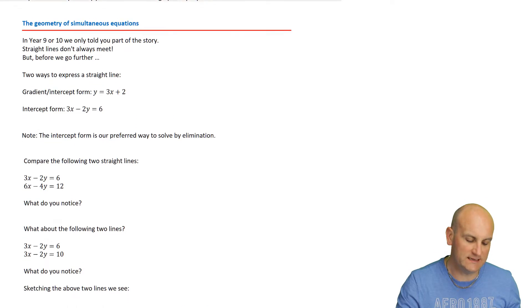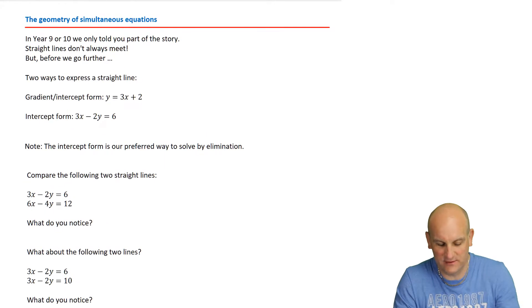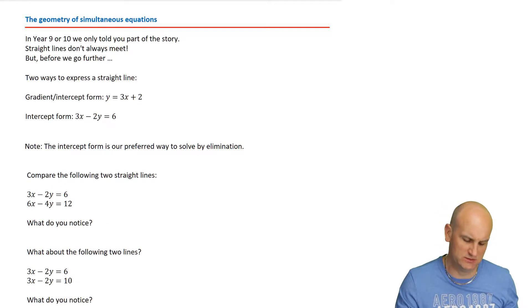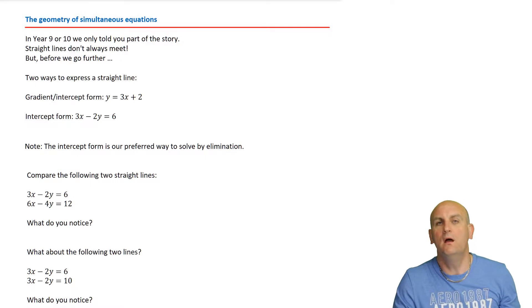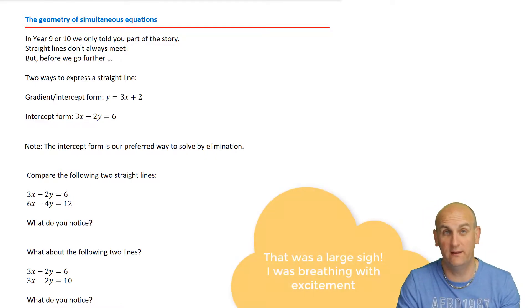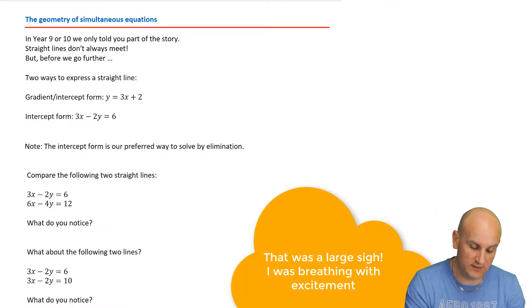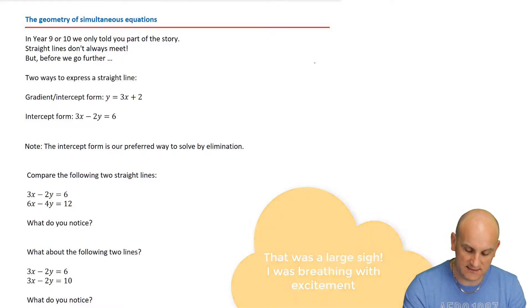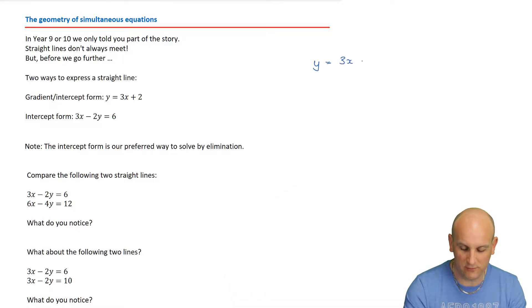I told you I was going to do it at the end - I'm actually going to do it now. The geometry of simultaneous equations. We know that straight lines can be written in two different ways, and I've written them here. There's gradient intercept form, which is y equals 3x plus 2, for example.